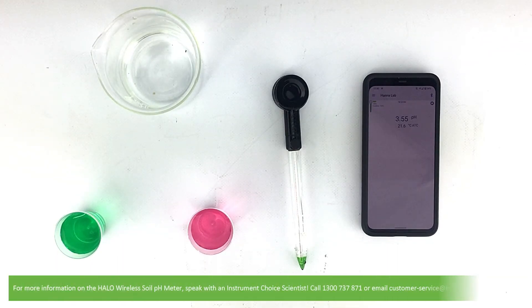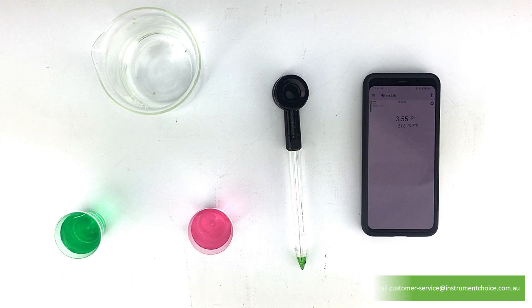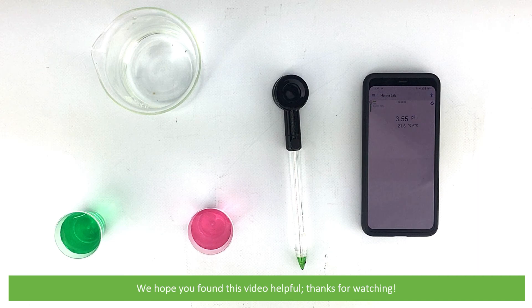For more information on the Halo wireless soil pH meter, speak with an Instrument Choice scientist. Call 1300 737 871 or email customer-service at instrumentchoice.com.au. We hope that you found this video helpful. Thanks for watching!